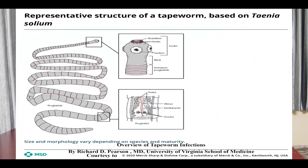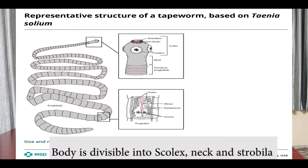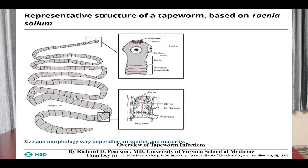The body of Taenia solium is segmented, elongated, and ribbon-like. It is dorsoventrally flattened and may attain a length of up to five meters. It is opaque white in color. The body is divisible into three regions: the scolex, neck, and strobila. The scolex resembles a pinhead and measures about one millimeter in diameter.